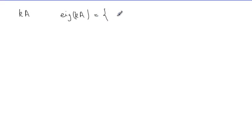Next, if we multiply matrix A by a scalar k, the eigenvalues of the new matrix kA are the k-multiples of the eigenvalues of A. That is, the eigenvalues of kA are {kλ₁, kλ₂, ..., kλₙ}.